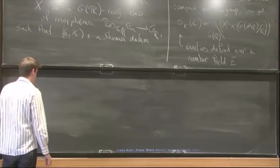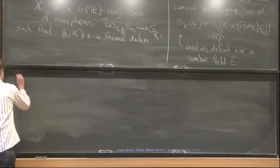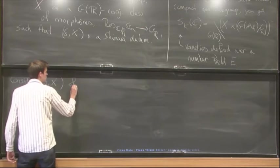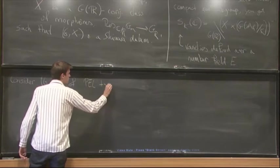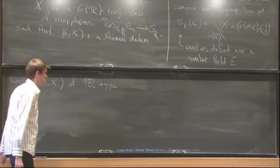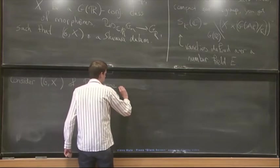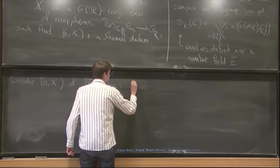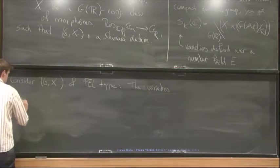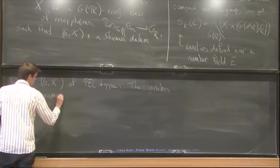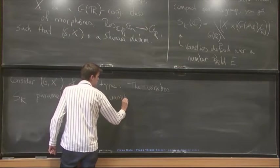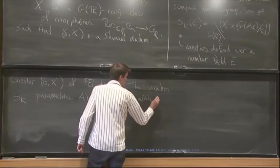So I will consider only Shimura datum of PEL type. So consider g, x of PEL type. This means that these varieties S of K, they parameterize abelian varieties with additional PEL structures.